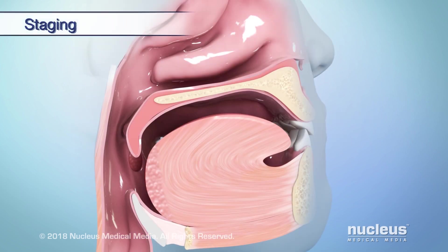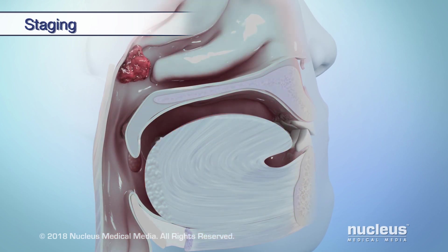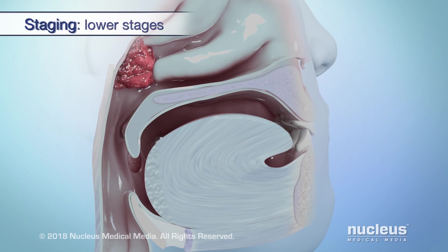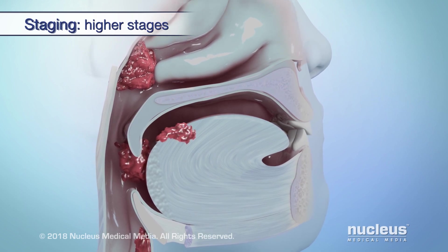If you have head and neck cancer, your doctor will try to find out the extent of the disease and if it has spread. This is called staging. The stages of cancer range from 0 to 4. A lower stage means less cancer growth, and a higher stage means more cancer growth.